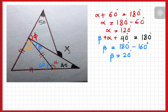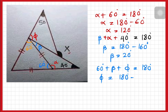Delta plus beta plus 60 degrees equals 180 degrees because it is a straight line. So 60 degrees plus 20 degrees plus delta equals 180 degrees. Delta equals 180 degrees minus 80 degrees, so delta equals 100 degrees.